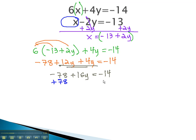Adding 78 to both sides gives us 16y equals 64. Finally, get y alone by dividing both sides by 16, and we find y is equal to 4.